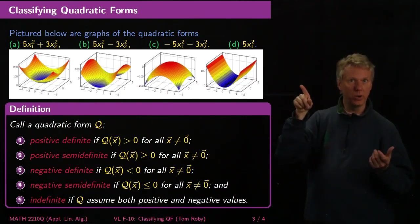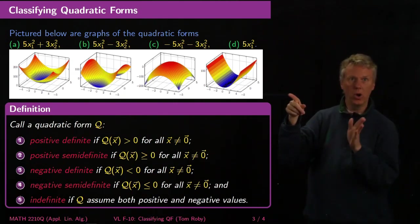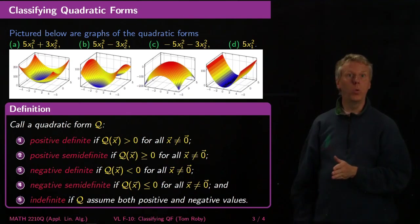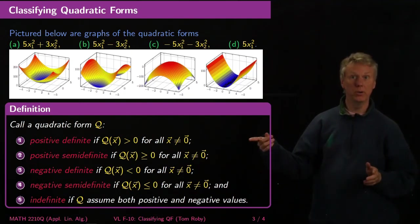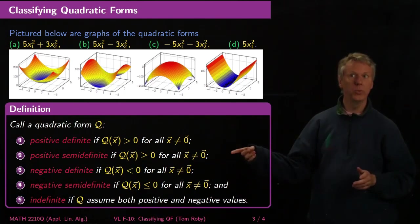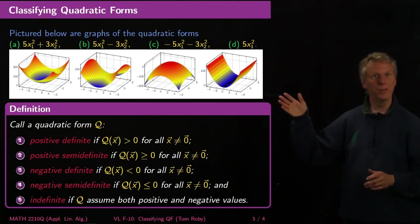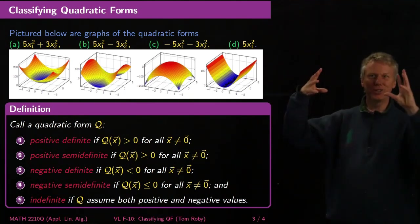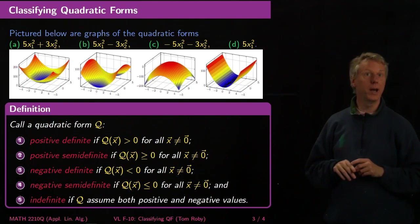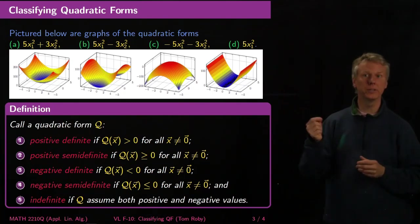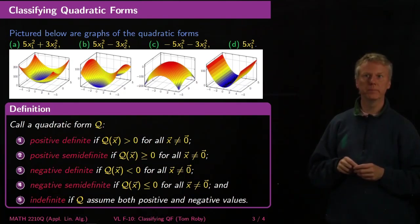If you look at this last one here, there's a whole line in that trough, where x equals zero and y can be anything, which give you zero. So that's the positive semi-definite one. Whereas the one on the far left is actually positive definite. The only place where it's equal to zero is when the vector that you input is zero.